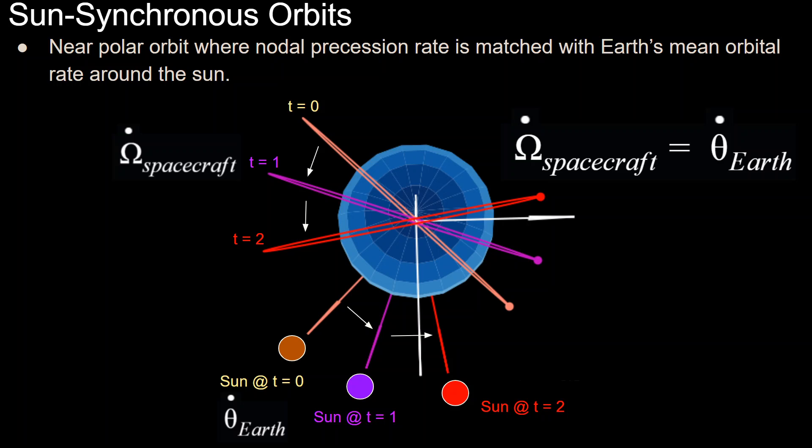The nodal precession rate is the rate of change with respect to time of the right ascension, which is a Keplerian orbital element. The Earth's mean orbital rate around the sun is the mean rate at which the Earth goes around the sun. The Earth goes around the sun in roughly 365.25 days, so the true anomaly of the Earth will change by 360 degrees, one revolution, every year.